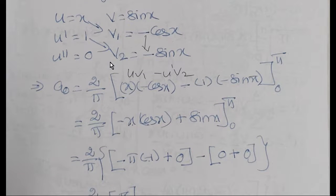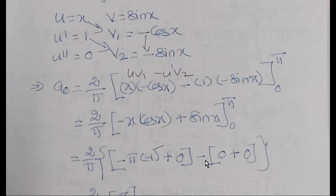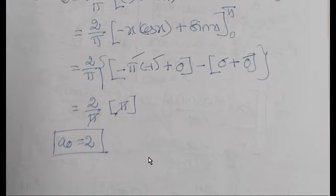Applying the limits: at x = π, we get −π·cos(π) + sin(π) = −π·(−1) + 0 = π. At x = 0, everything is zero since sin(0) = 0 and x = 0. So a₀ = (2/π)·[π − 0] = (2/π)·π = 2. Therefore a₀ = 2.